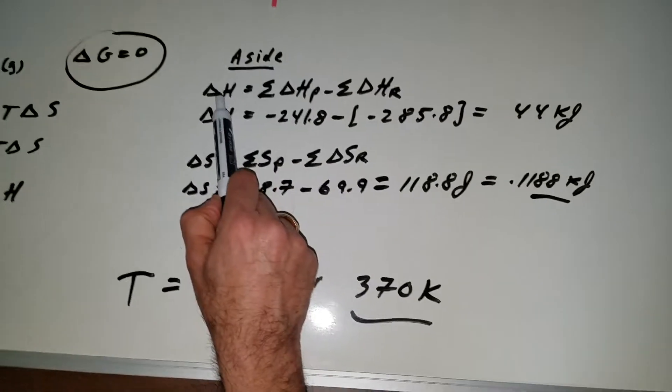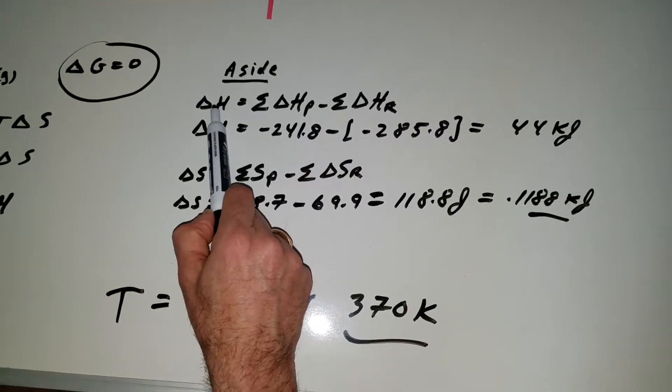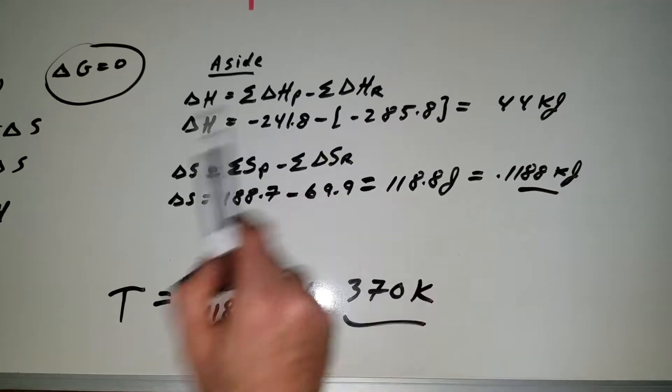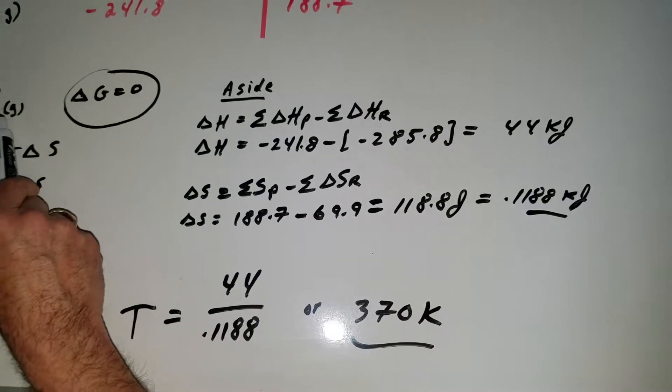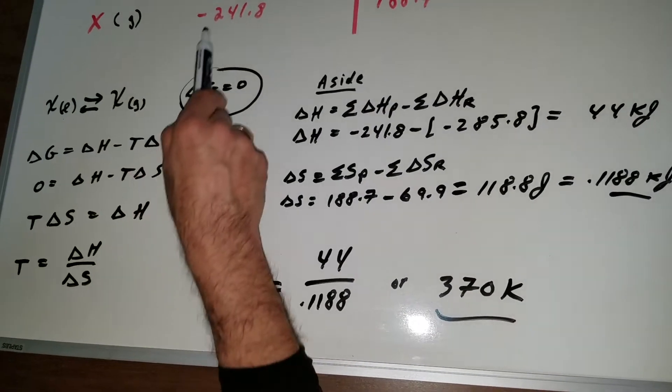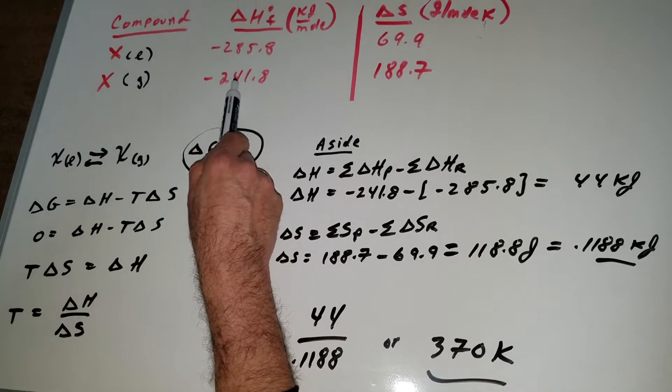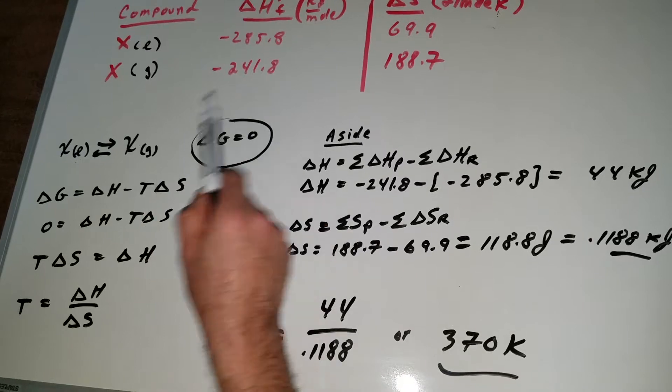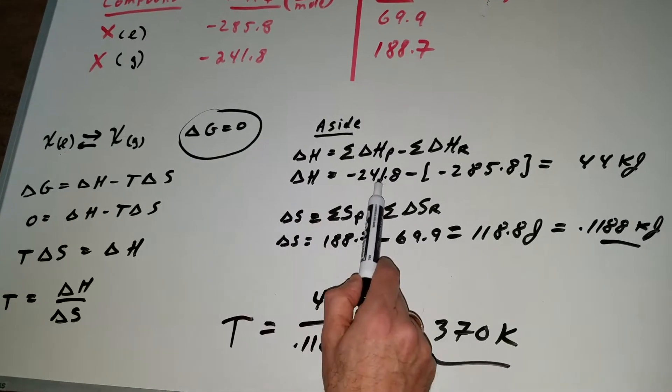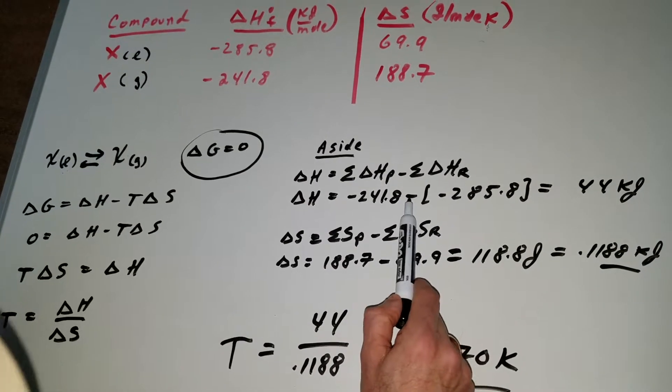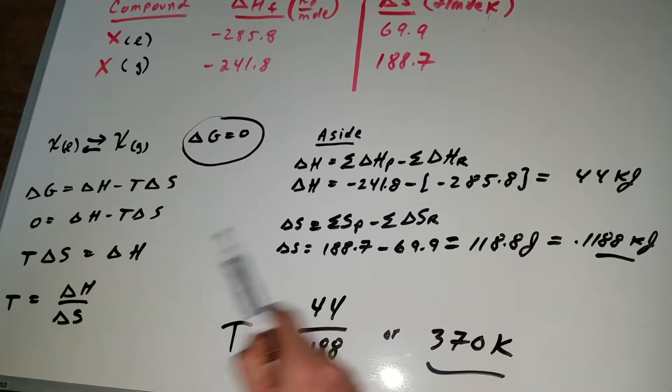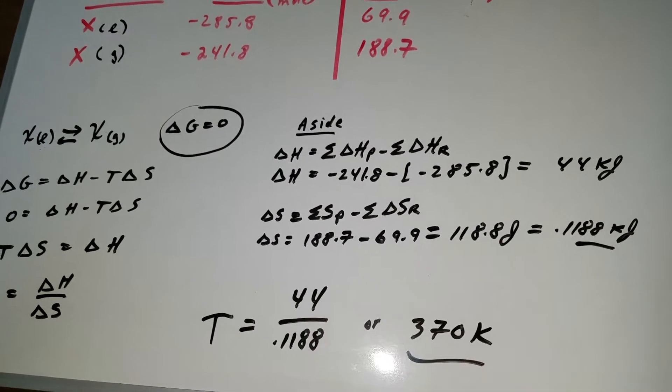So we're going to go aside and the delta H of a reaction is the sum of the products minus the sum of the reactants. So the products is gaseous water. So we first go for gaseous water. It's minus 241.8. In this case I said water I meant X. So it's minus 241.8 minus the minus 285.8 and that gives me 44 kilojoules.